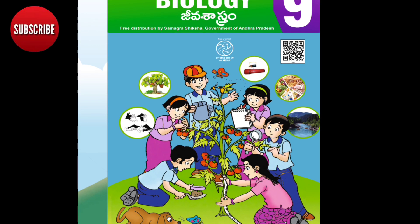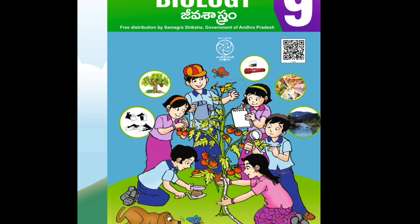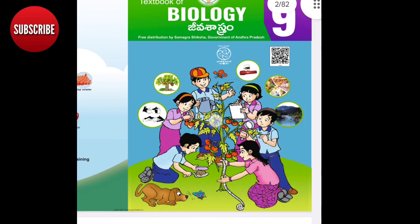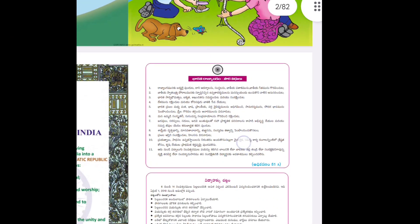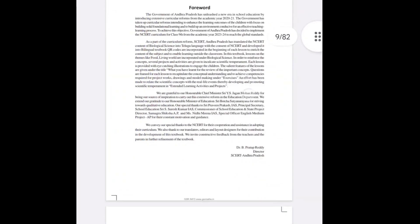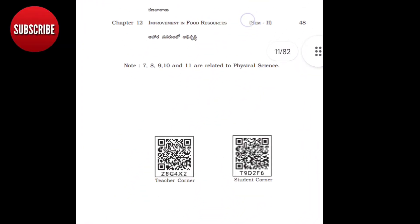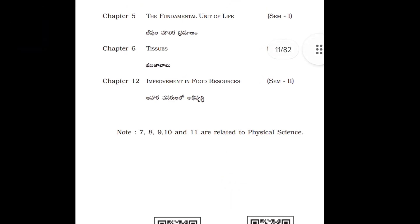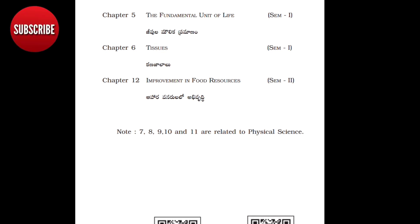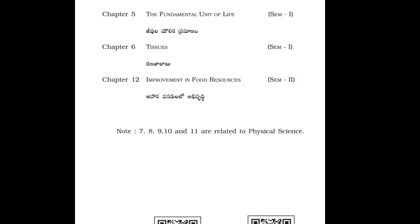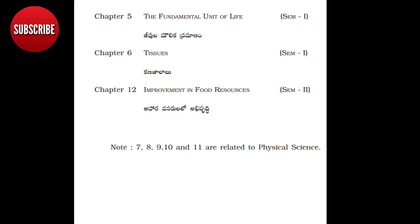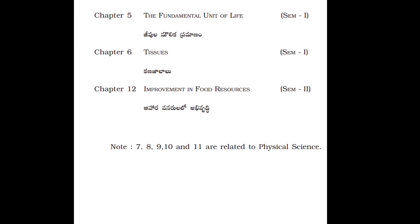In the last year, we had a lot of text in the 9th class. We are going to take 3 units. In the first and second semester, we have to take 3 units — the fundamental of life, tissues, and improvement of food resources. Last year's weight was 11 units; this year's weight is only 3 units.